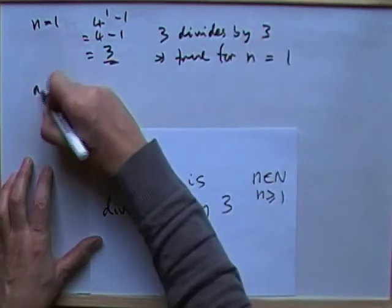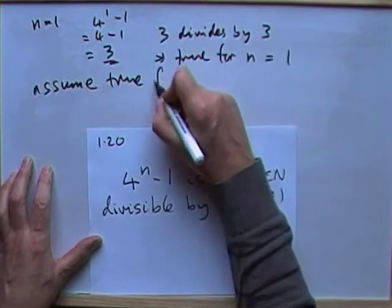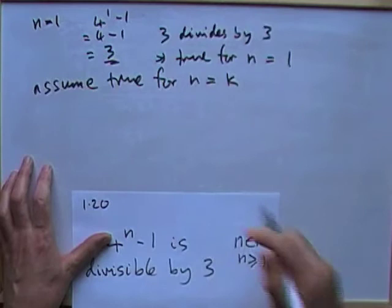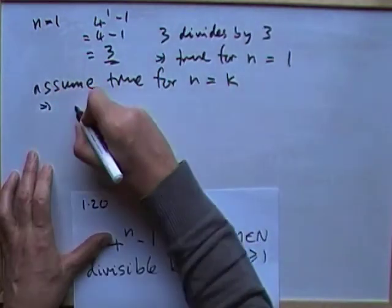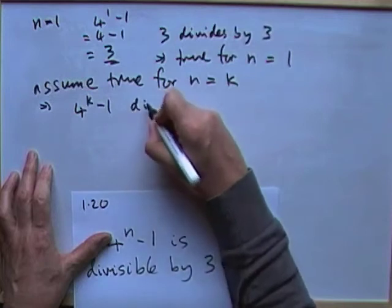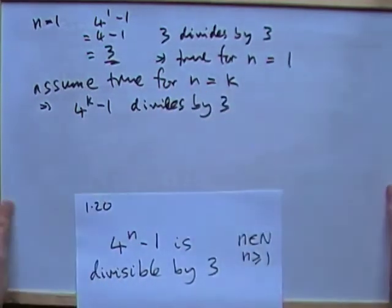Right, next part. Same as before. Assumption. Assume it's true for n equals any number at all k, which would mean that 4 to the power of k minus 1 divides by 3. Just want to fix this down.